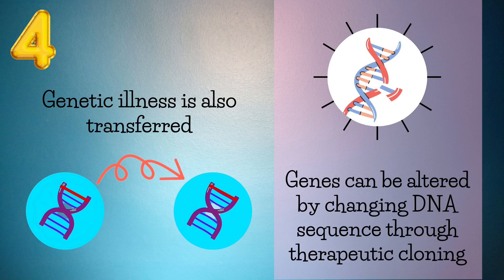Fourth, therapeutic cloning can treat genetic ailments. Since somatic cells have the same genetic information as the person, any genetic illnesses the person has can also get transferred. However, scientists can alter the genes by changing the sequence of DNA through therapeutic cloning and fix the problems that cause the genetic disease, creating a wide new field of medical treatments.